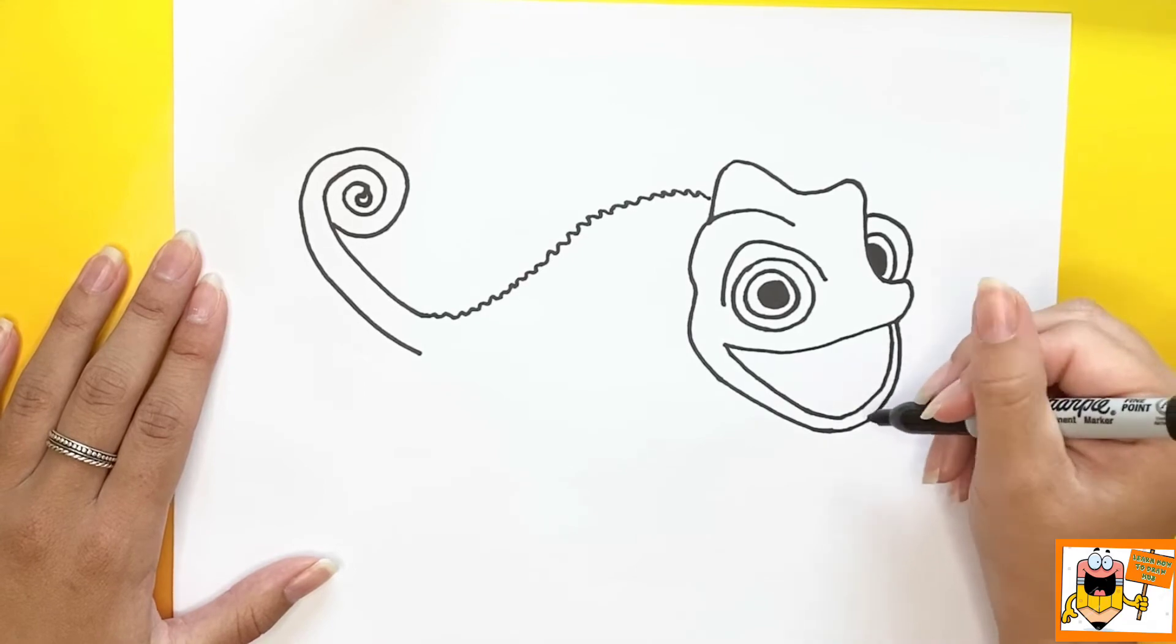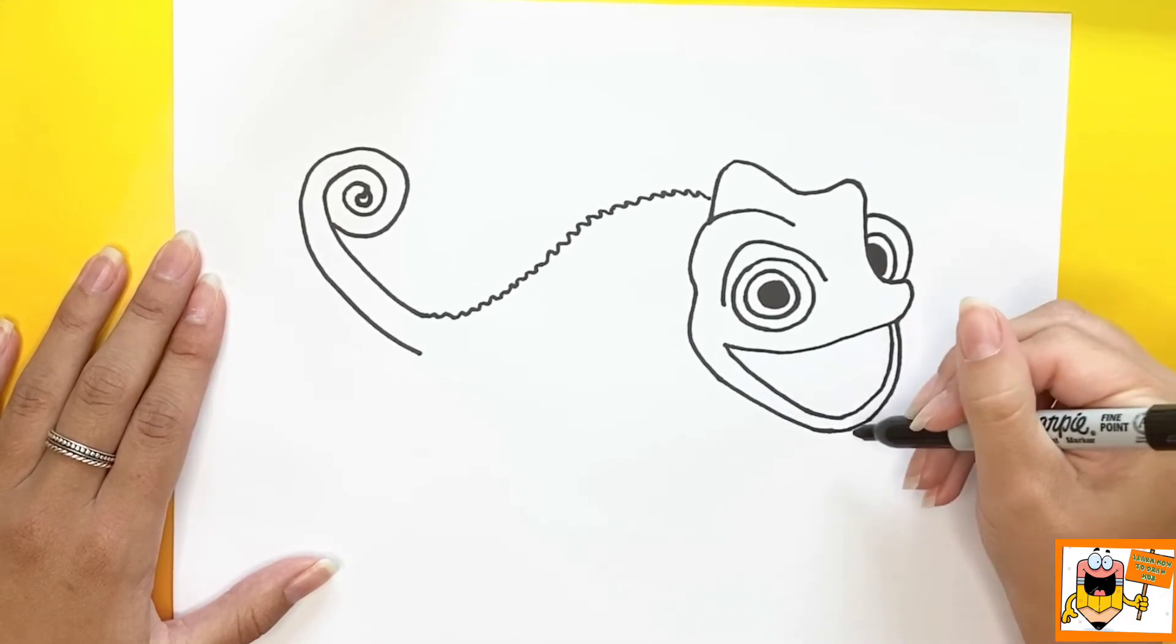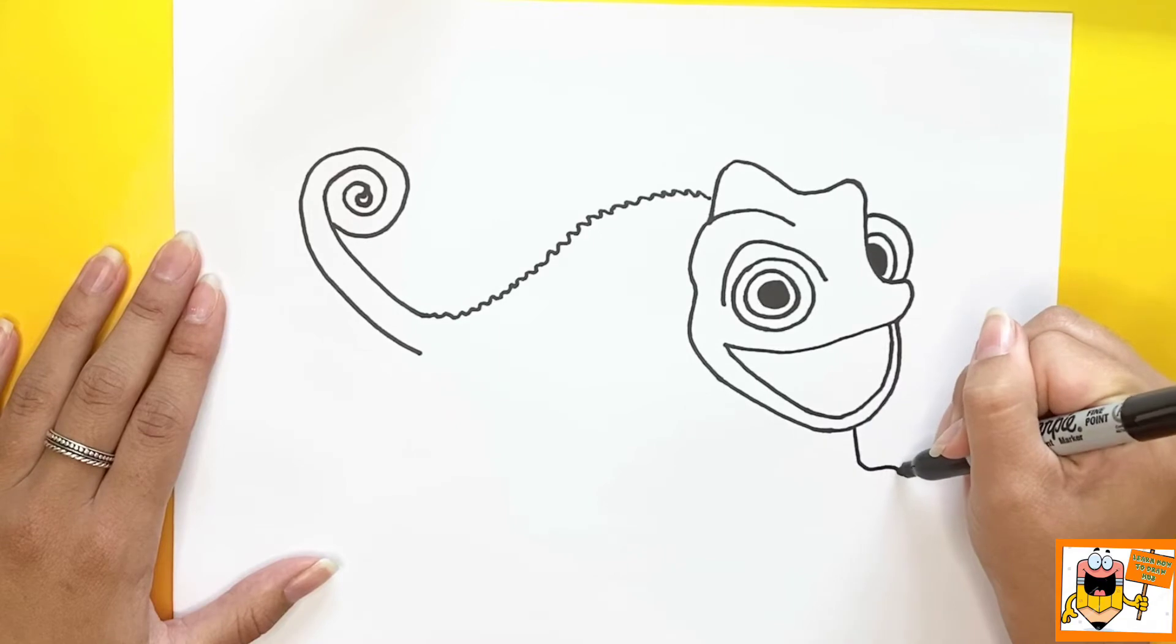We're going to move back towards the face and we're going to make a front foot underneath his mouth.